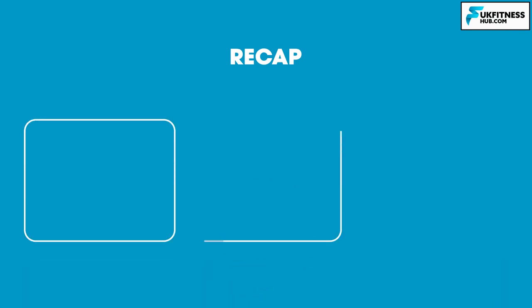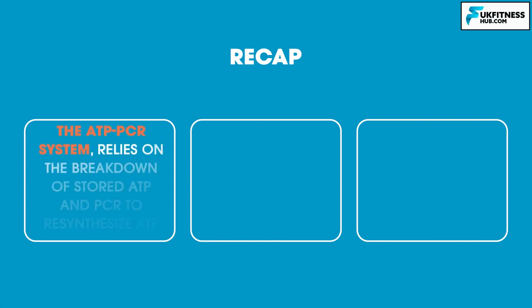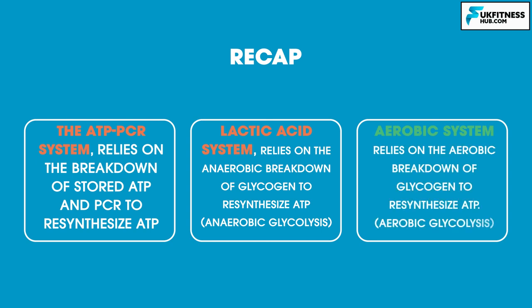Here are the final three takeaways. The ATP-PCR system relies on the breakdown of stored ATP and PCR to re-synthesize ATP. The lactic acid system relies on the anaerobic breakdown of glycogen to re-synthesize ATP — this is known as anaerobic glycolysis. And finally, the aerobic system relies on the aerobic breakdown of glycogen to re-synthesize ATP, known as aerobic glycolysis.